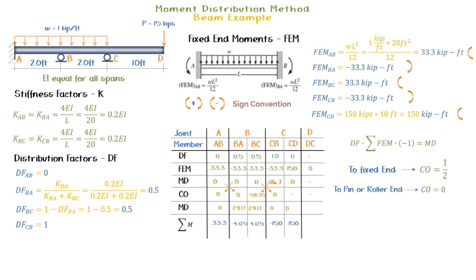Next, I like to draw a diagram to show the different beam spans with its corresponding moments. Finally, from the diagram, we can see that the moment at point C is 150 kip-feet.